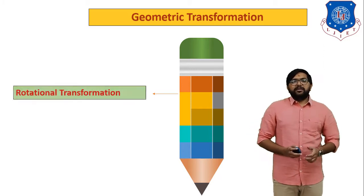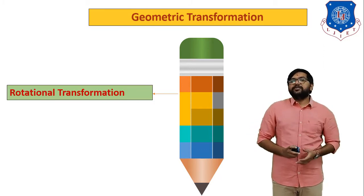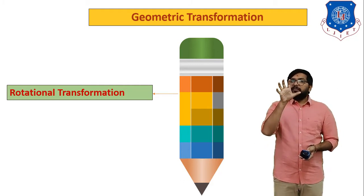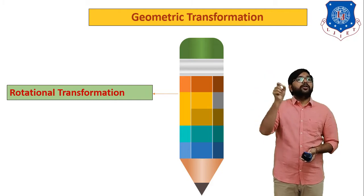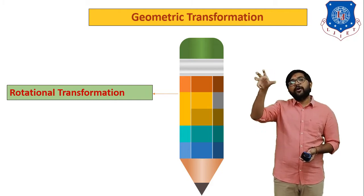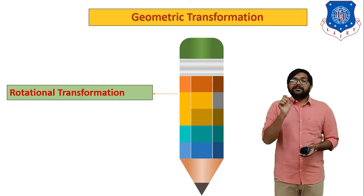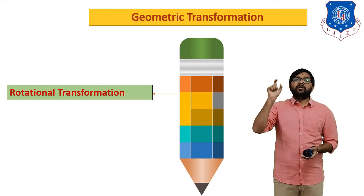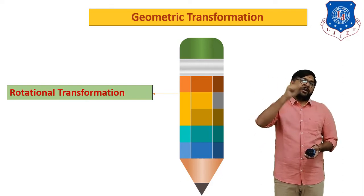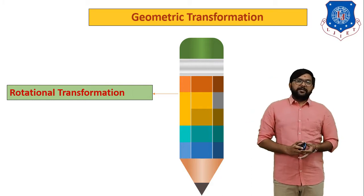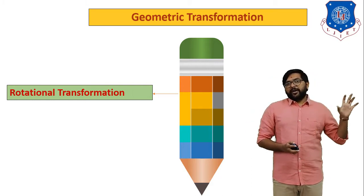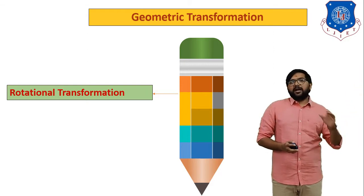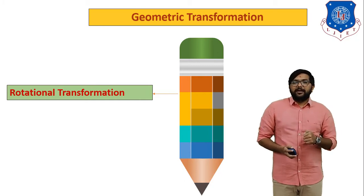In today's session we discuss the second process: rotational transformation. Rotational transformation means rotating your object with respect to the origin or any point of the object, either in anti-clockwise or clockwise direction. First we will derive the equation for rotational geometric transformation, and after that we will solve a numerical based on that.